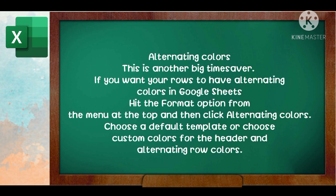In alternating colors, this is another time saver. If you want your rows to have alternative colors in Google Sheets, hit the format option from the menu at the top and then click alternative color. Choose a default template or choose custom colors.